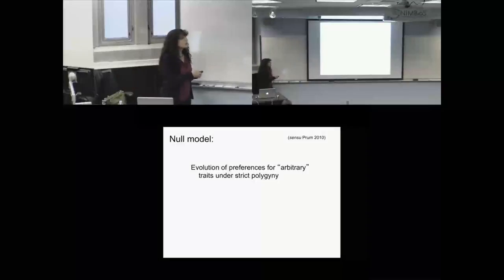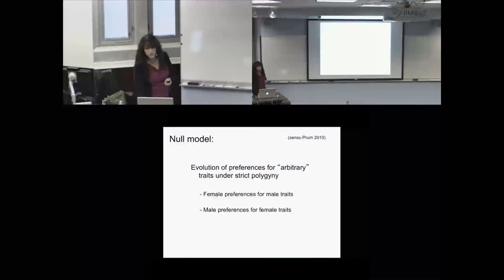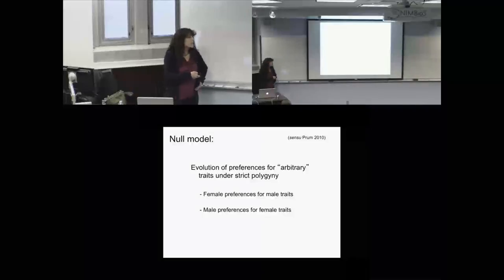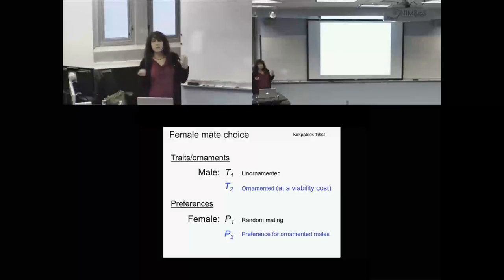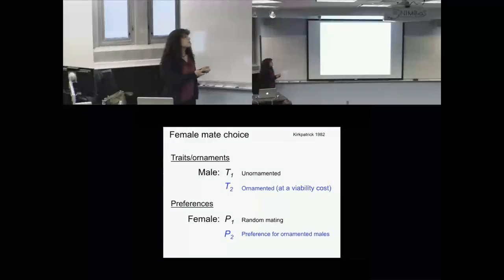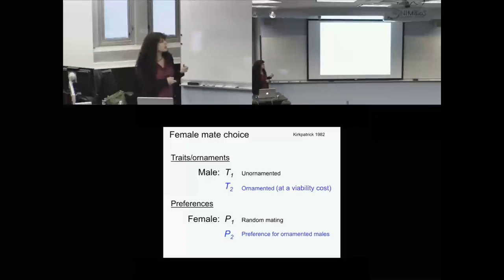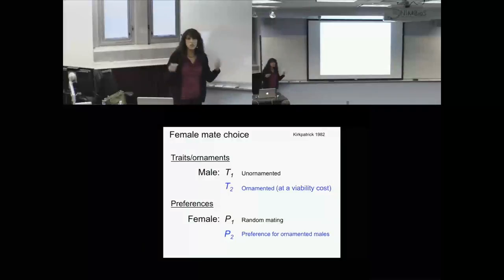I'll first review the null model of sexual selection for female preferences for male traits — old work by Mark Kirkpatrick and Russ Lande. Kirkpatrick supposed a two-locus haploid model where one locus is for a trait: T1 are unornamented males, T2 are ornamented males, expressed only in males. This ornament comes at some physiological or predation cost. Preferences are expressed only in females: P1 is an allele for random mating, P2 is a preference for ornamented males.